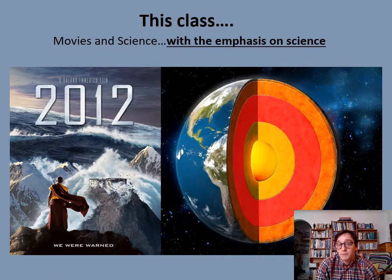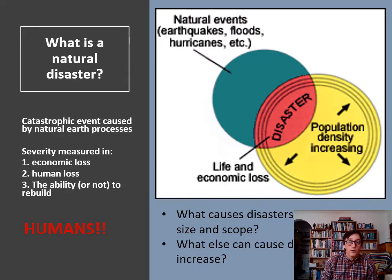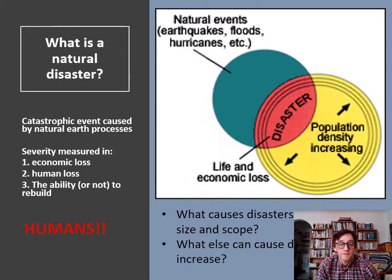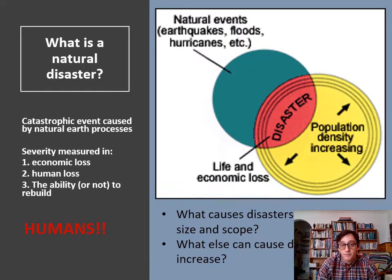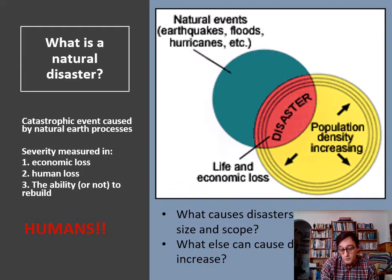This class is very much about the science — Earth science. It is a general Earth science class, as well as using Hollywood movies to help us in the learning process. What is a natural disaster? Well, these are catastrophic events caused by natural Earth processes, and severity is measured in economic loss — to infrastructure, to property, to the economy — and importantly to human loss in terms of fatalities and casualties.